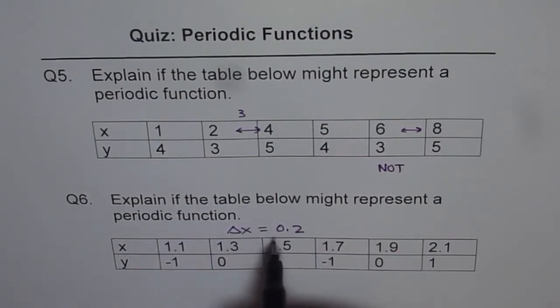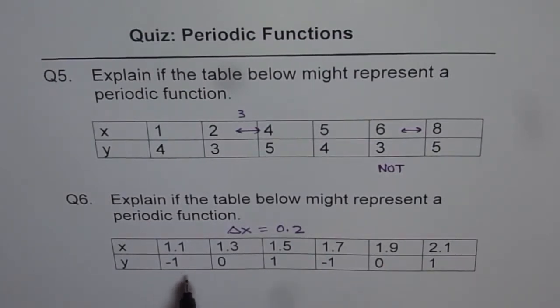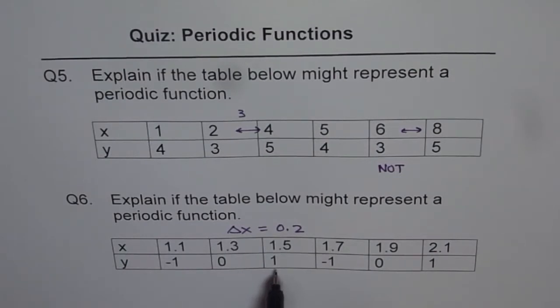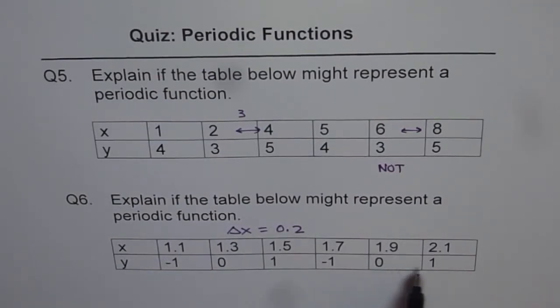And for a constant increase in the input, we do have a constant change in the output. And what we see here is it is minus one, zero, one. Then again, minus one, zero, one. So it repeats.